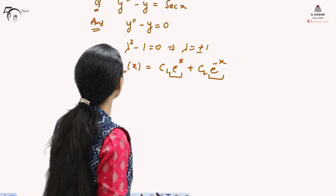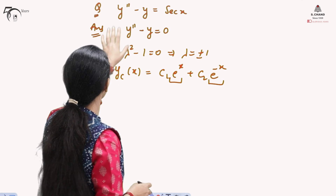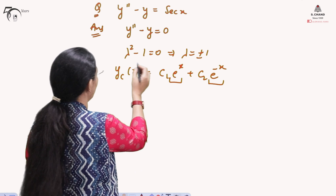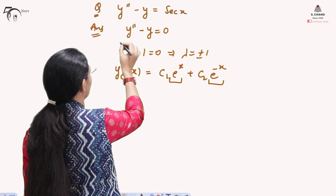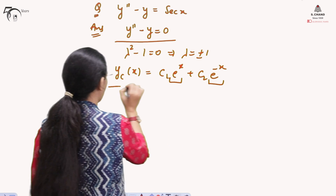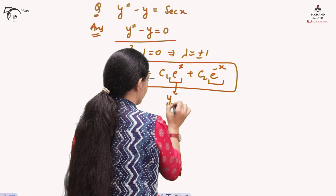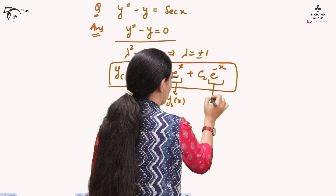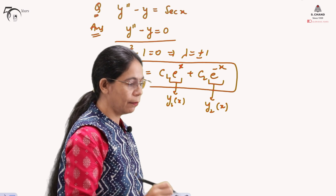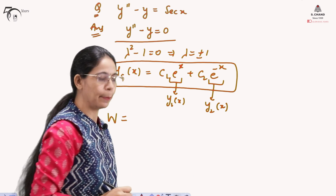Coming back to the question: the given differential equation was y'' minus y equals sec(x). The complementary function was written corresponding to the homogeneous part. We call the two parts of the complementary function y₁(x) and y₂(x). First we need to find the Wronskian, which decides whether they are linearly independent or not.